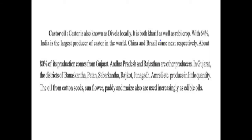The next is castor oil, also known as dibella locally. It is both a kharif as well as rabi crop. With 64%, India is the largest producer of castor in the world; China and Brazil come next. About 80% of its production comes from Gujarat. Andhra Pradesh and Rajasthan are other producers. In Gujarat, districts of Banaskantha, Patan, Sabarkantha, Rajkot, Junagadh, and Amreli produce castor. The oil from cotton seeds, sunflower, paddy, and maize are also increasingly used as edible oils.